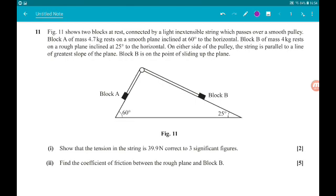which passes over a smooth pulley. Block A of mass 4.7 kg rests on a smooth plane inclined at 60 degrees to the horizontal. Block B of mass 4 kg rests on a rough plane inclined at 25 degrees to the horizontal. On either side of the pulley, the string is parallel to a line of greatest slope of the plane. Basically then, the string is parallel to the planes.